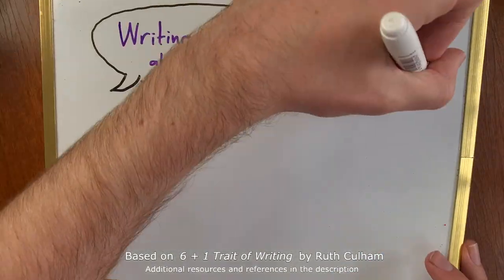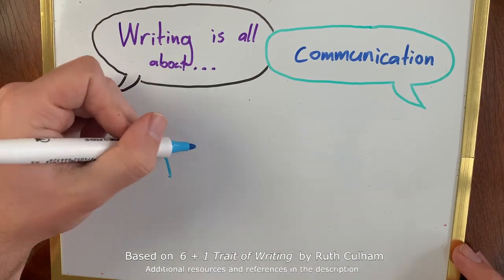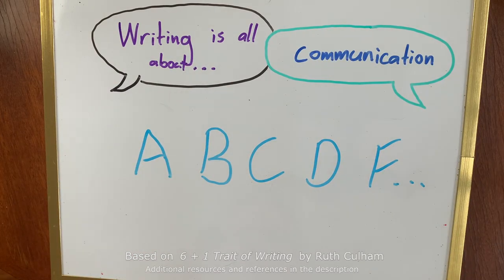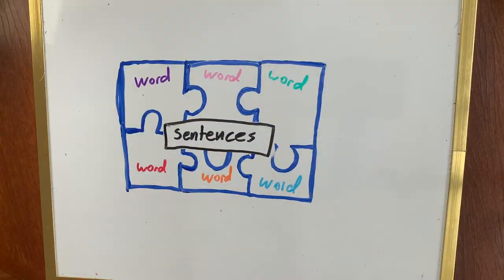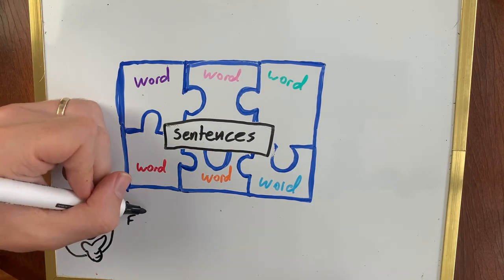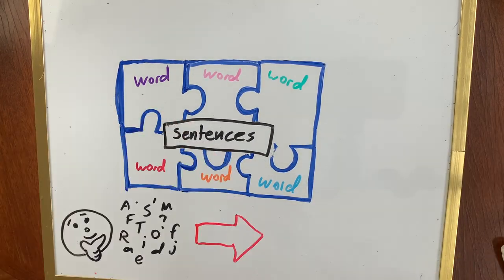Writing is all about communication. We have all these symbols called letters. When we put them together just right, they make words. And when the words come together just right, they become sentences. We can use these squiggles that are letters and words to share meaning.